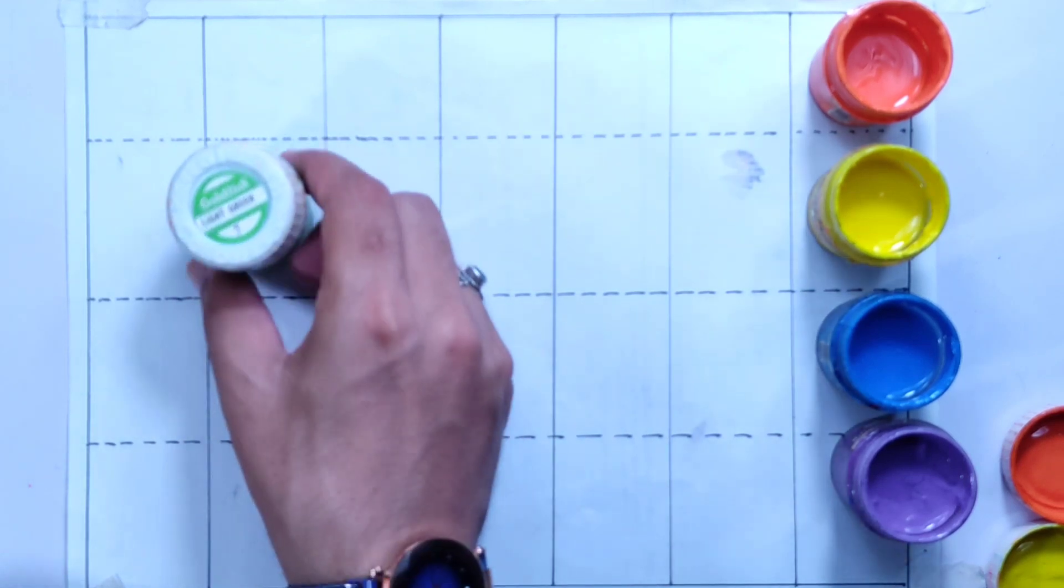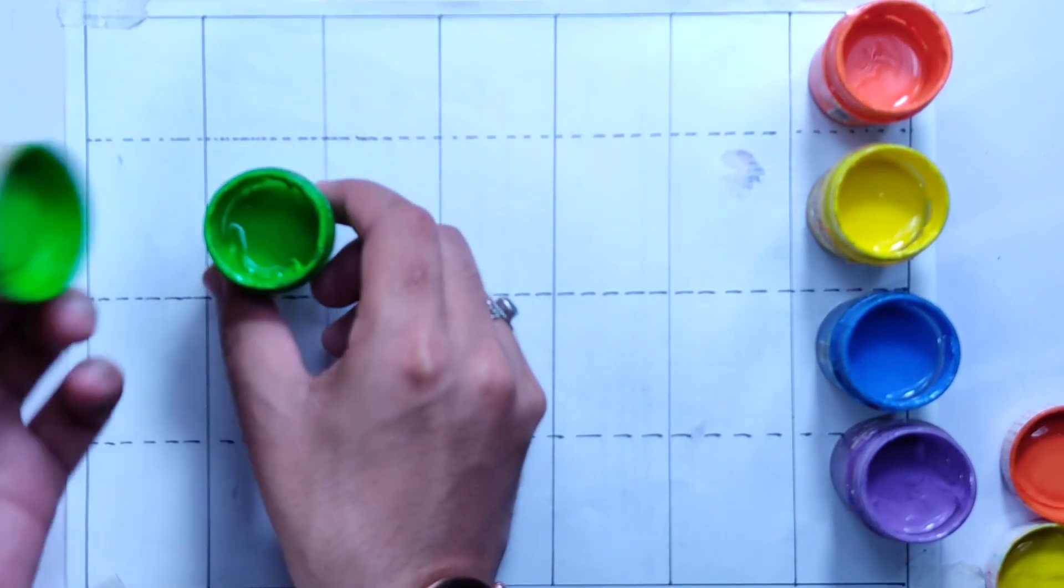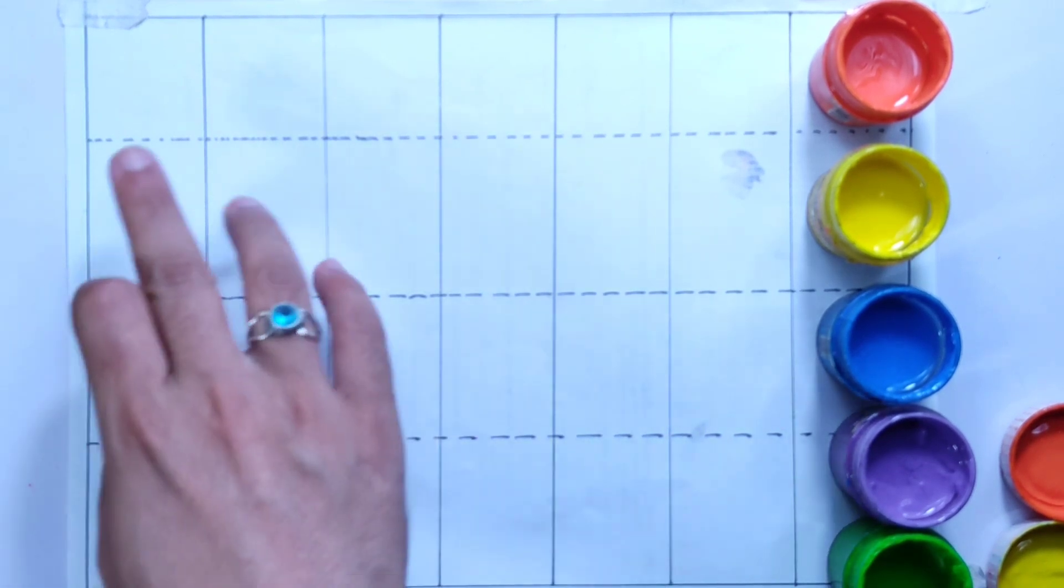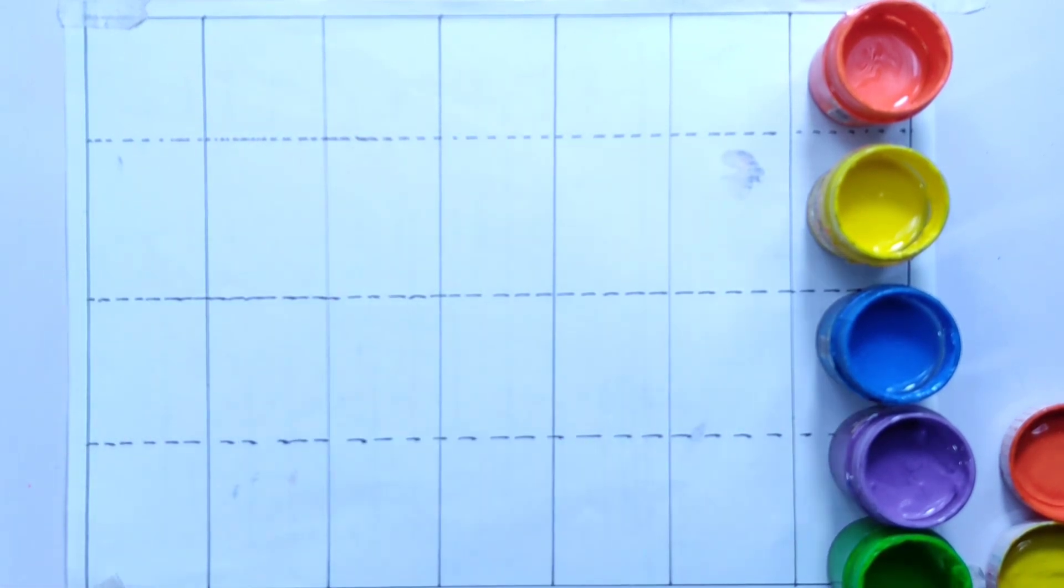Light green color. Let's start writing numbers from 1 to 20.